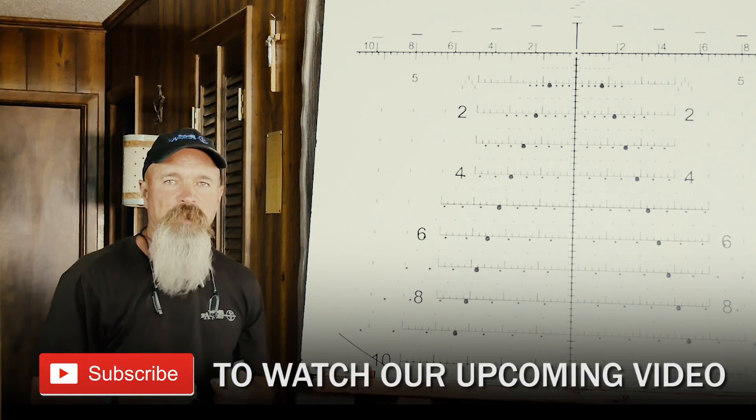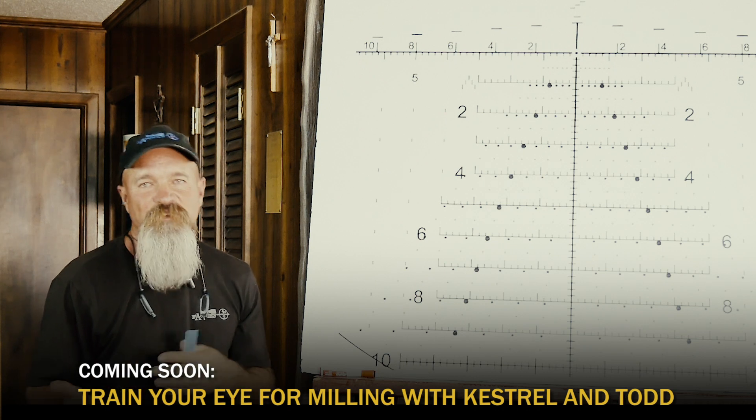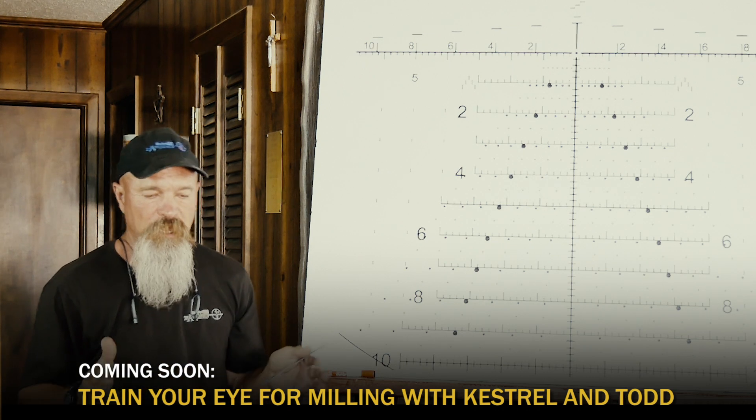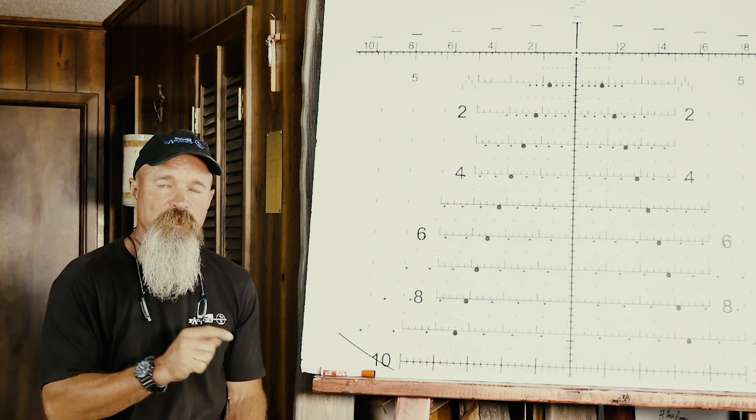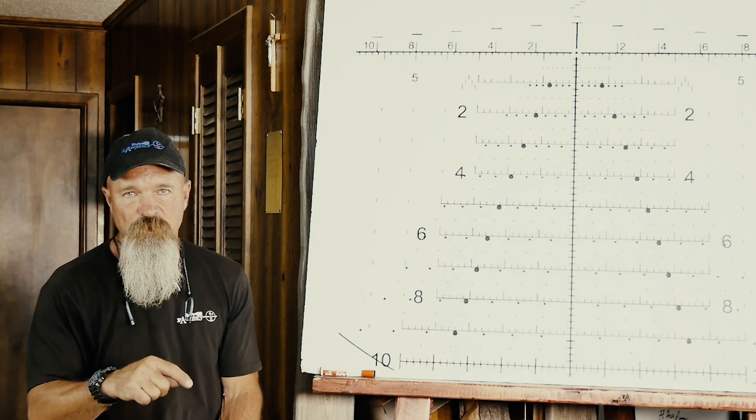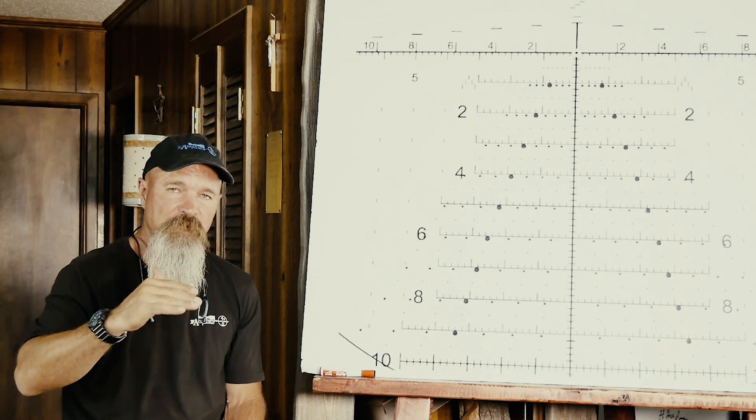You can teach yourself how to mill the target very quickly by taking a laser rangefinder. You have to know the size of the target to do this. So you take a known size target, plug it in, and then you would change the image size until you matched at the bottom of the screen where you were target size, image size, and range.